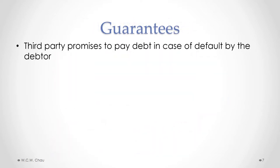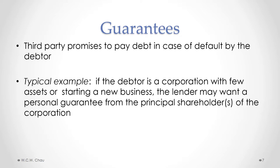With a guarantee, the third party promises to pay the debt in case of default by the debtor. A very typical example is where a corporation is applying for a loan from a bank — usually a new corporation starting out with a new business. As a new business, the corporation likely has very few assets and no track record of earnings, and the bank will more often than not want a personal guarantee from the principal shareholder. The effect is that if the corporation defaults on the loan, the bank can ask the principal shareholder to pay the loan — the principal shareholder will be personally liable.